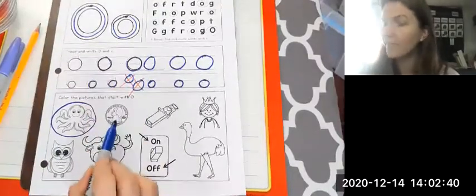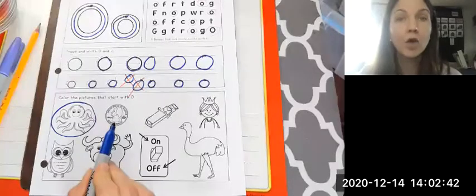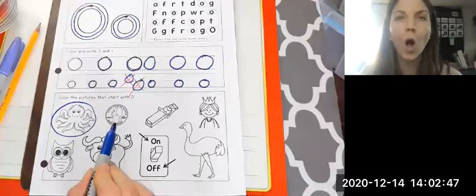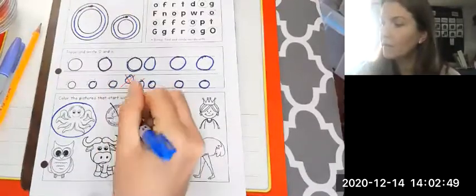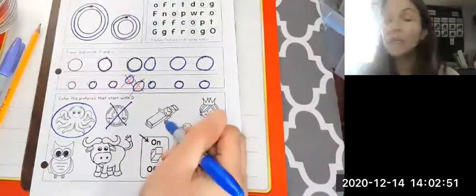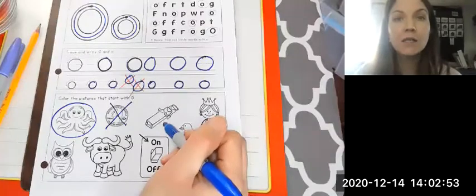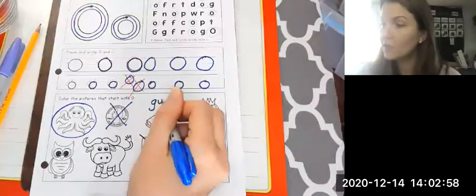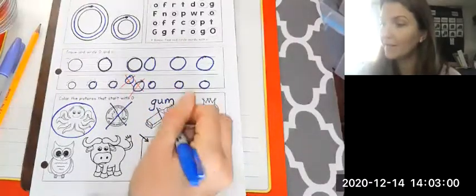What about here? Coin. It's a quarter. Neither of those start with that O or AW sound, right? GUM. That's a G sound. I know that. G-U-M. But it doesn't start with O.